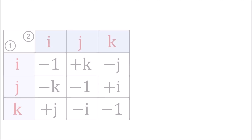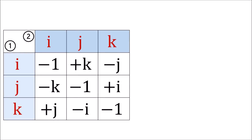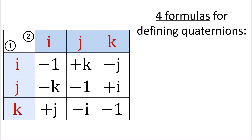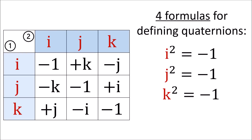We can also summarize the quaternion multiplication rules using a table. However, we can derive this entire table from just four simple formulas. The first three formulas tell us that i, j, and k all square to negative 1, and the final formula tells us that i times j times k equals negative 1. All possible multiplications can be derived from these four rules.